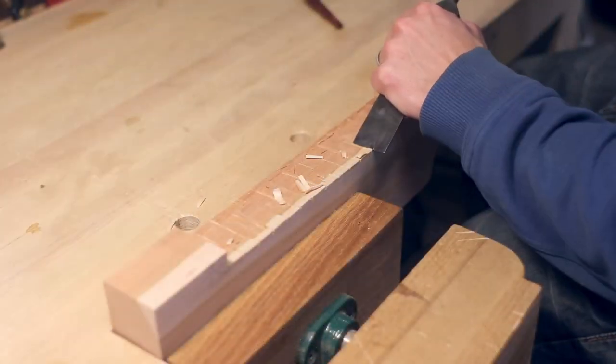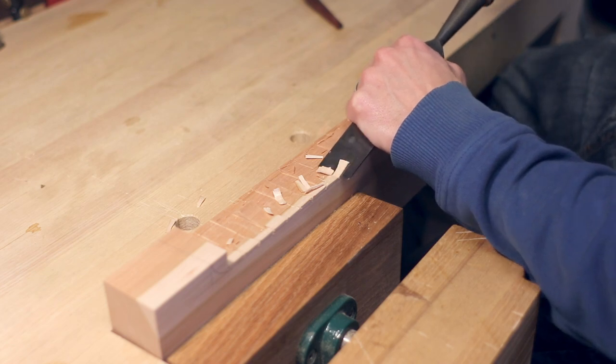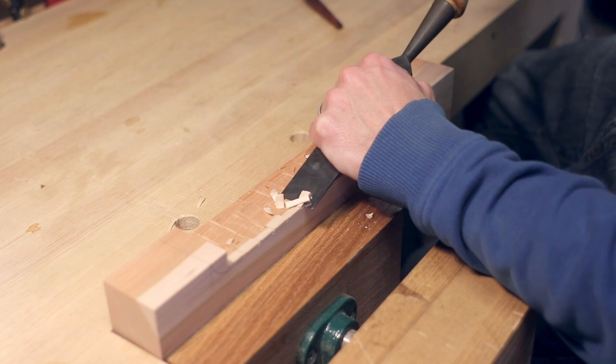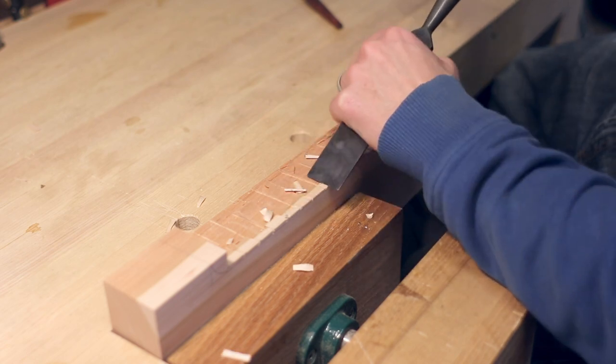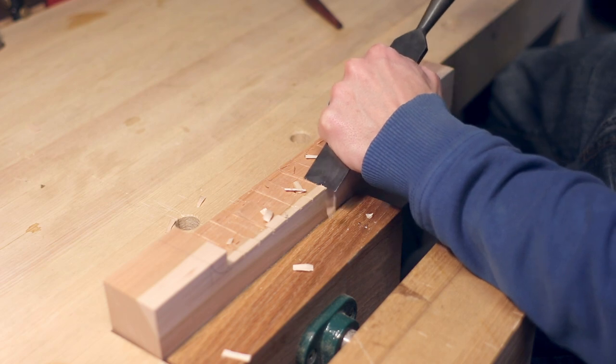For the cutout on the bottom, I make a bunch of relief cuts and then chisel away most of the waste. This is a tricky cut to do with hand tools. You can use a spokeshave, a rasp, a chisel—basically whatever you find to hog away most of that waste.